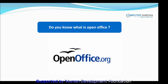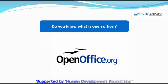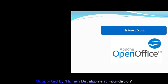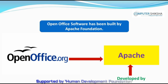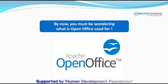Do you know what is OpenOffice.org? OpenOffice is a software which you can use on any computer because it is free of cost. So you don't have to pay and buy the software — you can download it from the internet absolutely free of cost. OpenOffice software has been built by Apache Foundation. By now, you must be wondering what is OpenOffice used for.